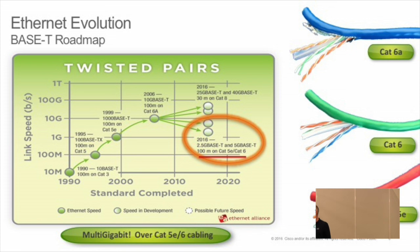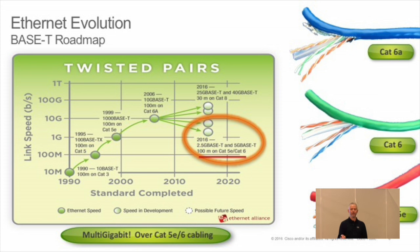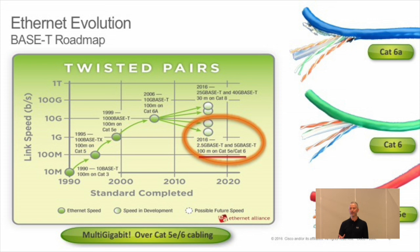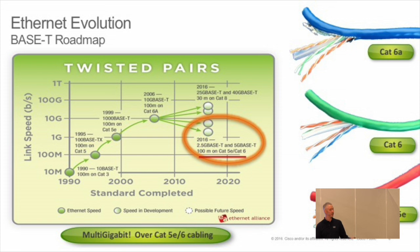Every one of these new speeds required new cabling infrastructure. That works really nicely in greenfield — if you're mostly building new buildings, that's wonderful. But if you've got a lot of older buildings and a vendor comes in and says 'here's a new speed, just pull a whole new cable,' that's actually a problem.